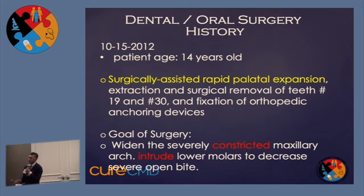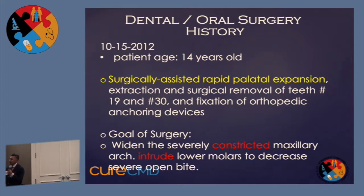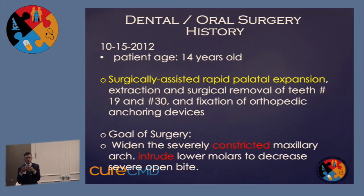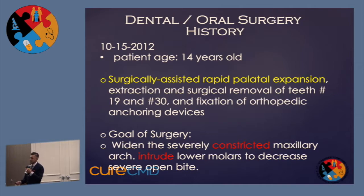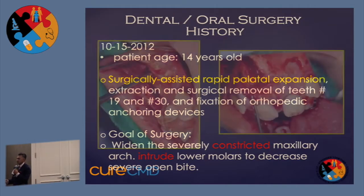Phase two surgery: her first procedure was this expansion surgery in 2012, when she was 14. The goal of this surgery was to correct the shape, or start to get the shape, of her upper jaw, which was really tight and narrow because of the growth pattern — it grew down creating a high arched palate. We wanted to get the shape of the upper jaw into a more normal fashion so we could eventually do the jaw surgery. The aim was to address the constricted upper jaw, move some teeth, and try to minimize the open bite.